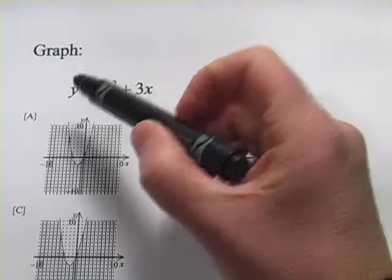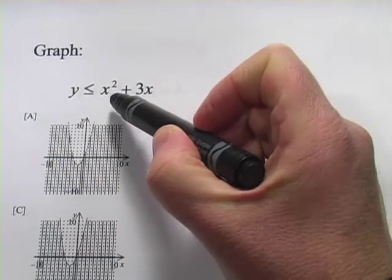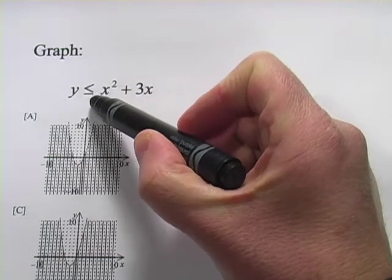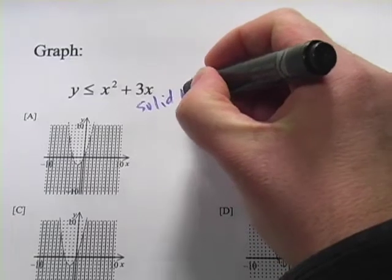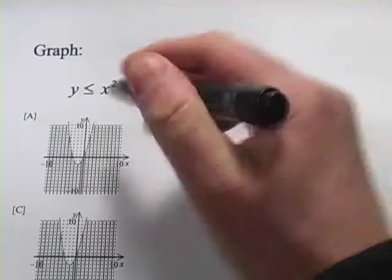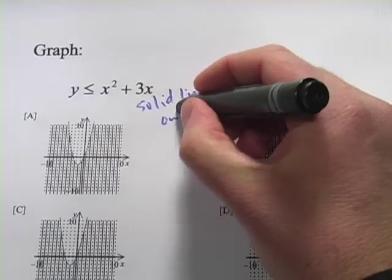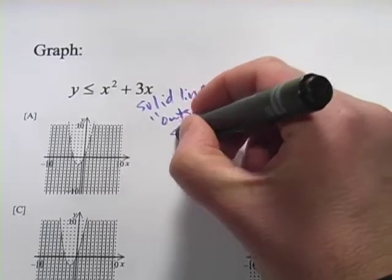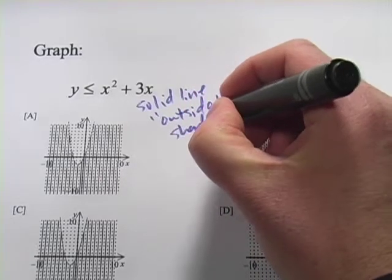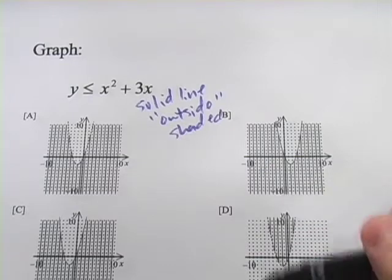Here we have y is less than or equal to x squared plus 3x. So this is an upward opening parabola. We've got less than or equal to, so it's going to be a solid line because of that or equal, and it's going to be outside the parabola is shaded because it's y is less than, so that's below the line or outside an upward opening parabola.